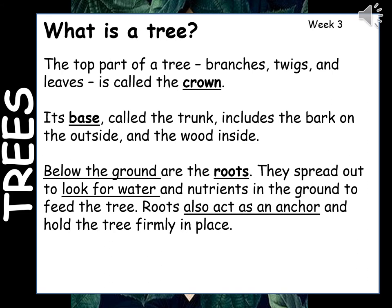So what is a tree? The top part of a tree, which includes the branches, the twigs, and leaves, is called the crown. Basically the whole top of the tree — where we have the leaves, fruits, flowers, and things like that — is all called the crown.